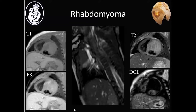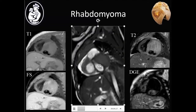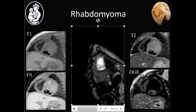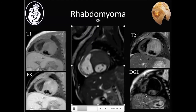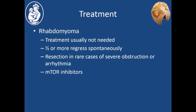Looking at the cine sequence, the tumor is visible in the left ventricular wall — quite a big tumor. You would be hard pressed to distinguish this from a fibroma, except that the delayed gadolinium enhancement gives it away. Usually rhabdomyomas don't need specific treatment because they tend to regress spontaneously, and even when multiple or large, often don't cause hemodynamic consequences or arrhythmias.